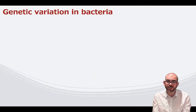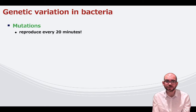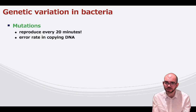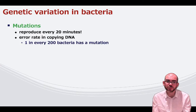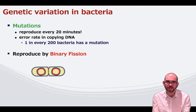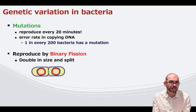All of this is possible because bacteria have tremendous genetic diversity, caused by a variety of mechanisms. One is mutations. A bacterium can reproduce once every 20 minutes, and errors occur whenever DNA is replicated — about one in every 200 bacteria has a mutation. Bacteria also reproduce by binary fission: the bacterium doubles in size and splits. Any time this happens, there's DNA replication, which can cause a mutation.